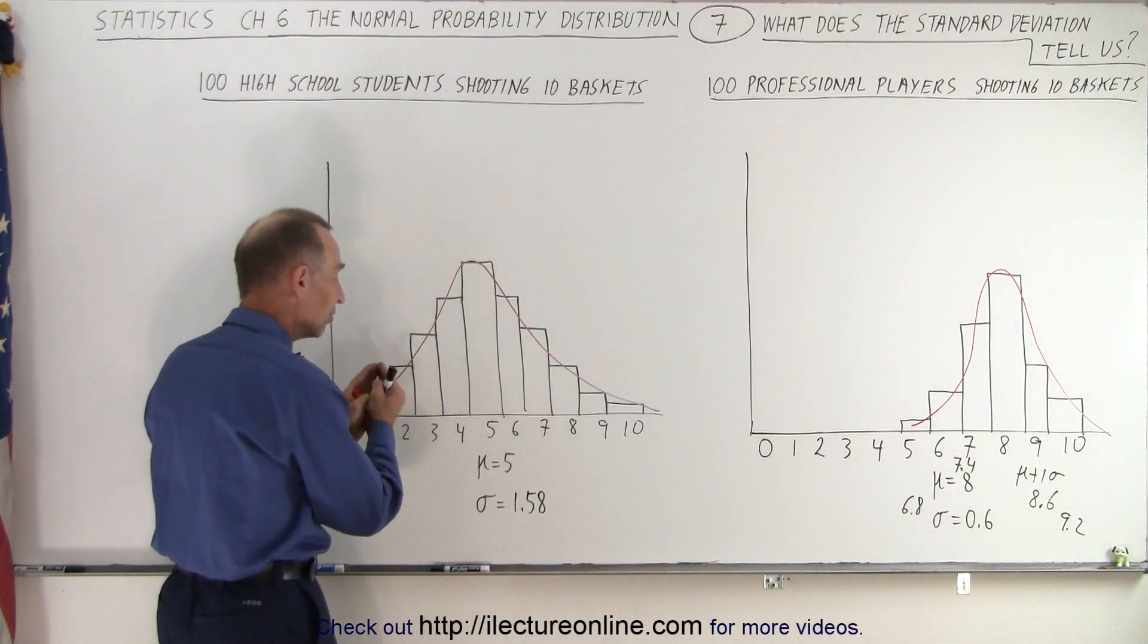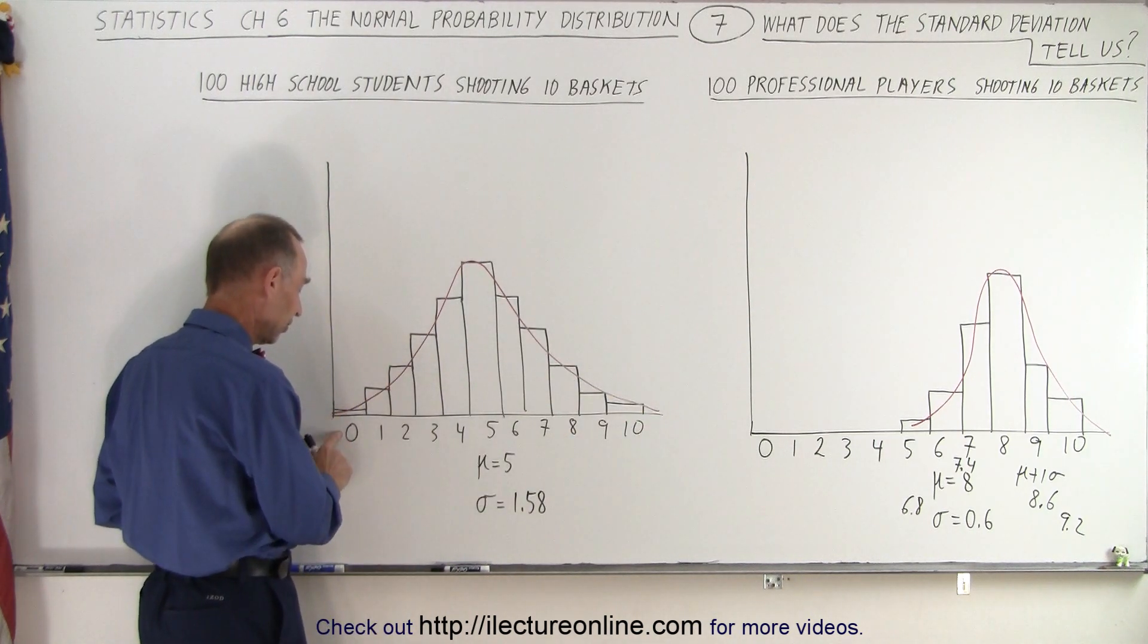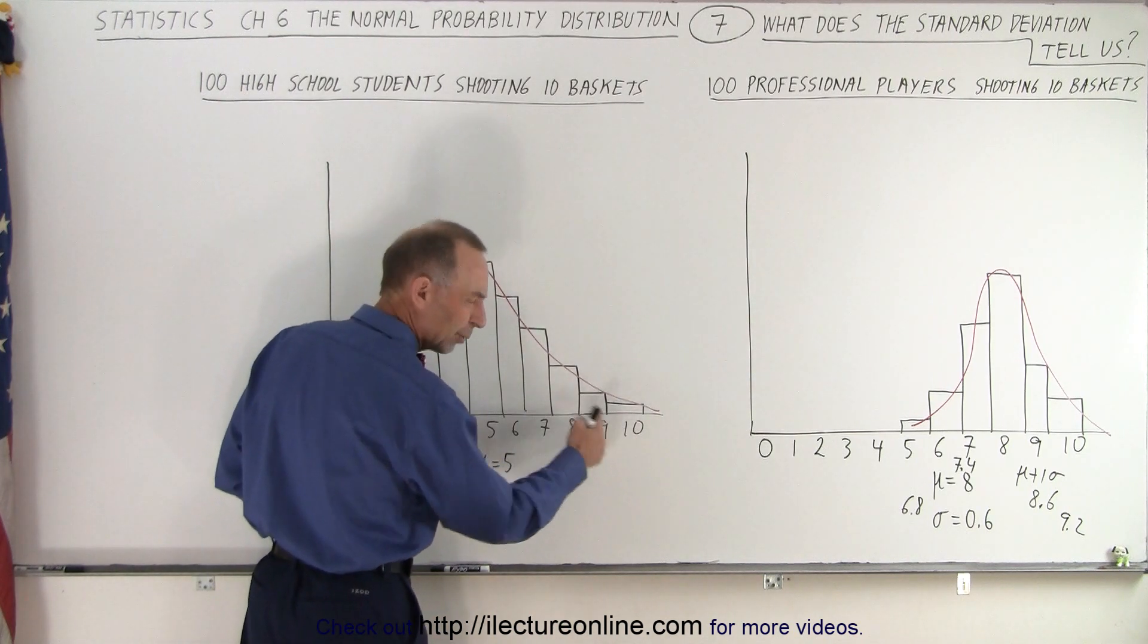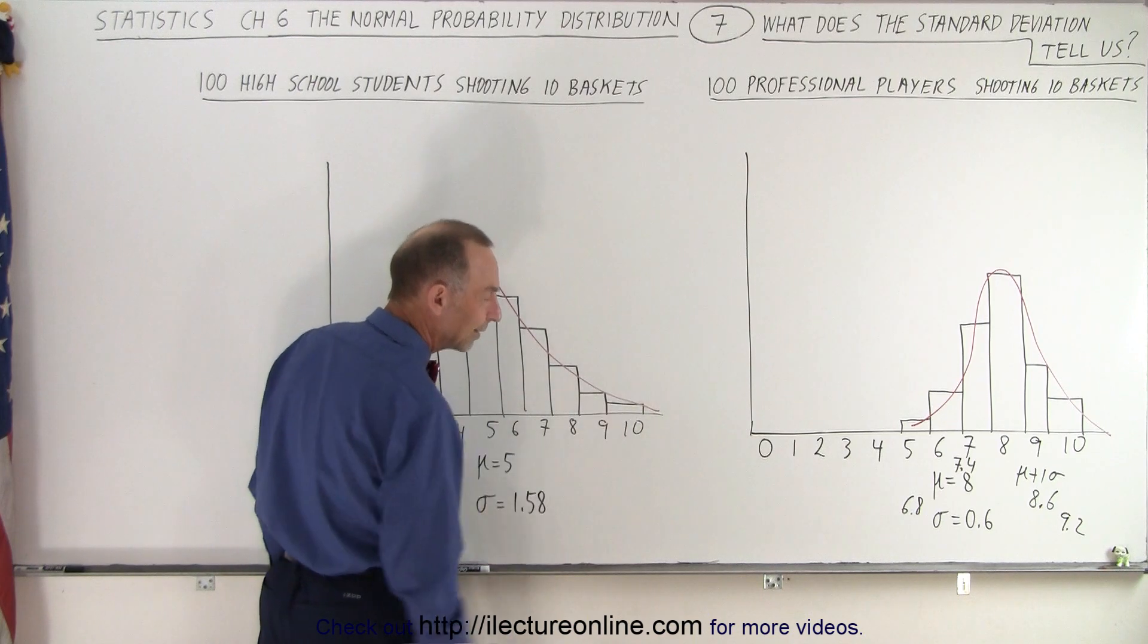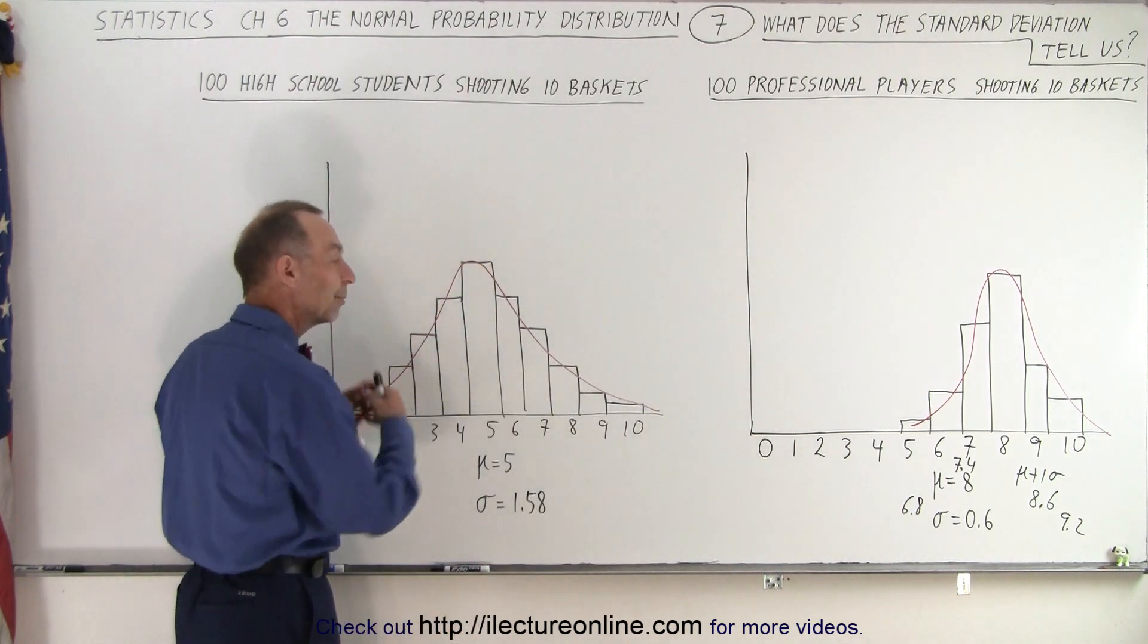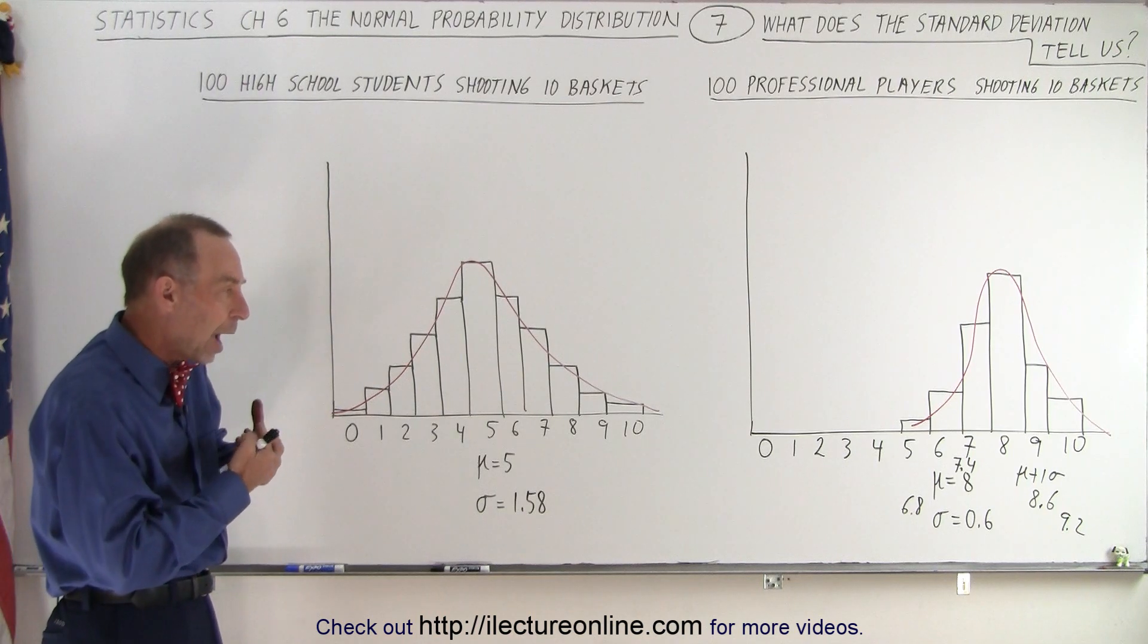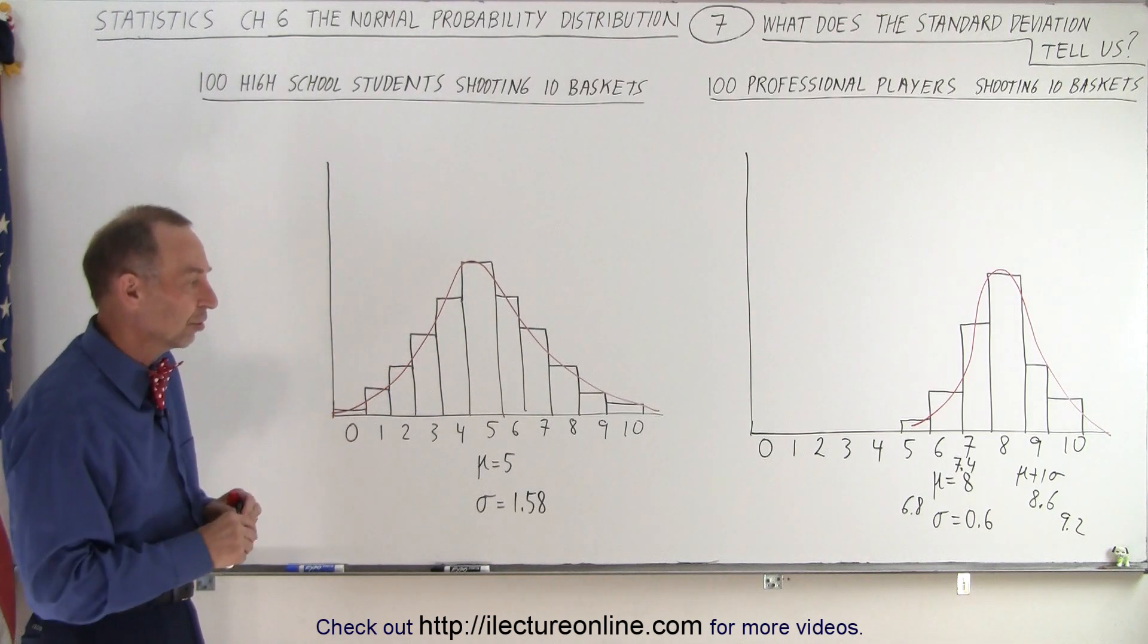A larger standard deviation means a wider range of probabilities. You can see that it goes all the way from 0, where there's one or two students that had 0 baskets, and notice that there were one or two students that had 10 baskets and everything in between. So standard deviation gives a feel for how wide the distribution is or how narrow the distribution is.